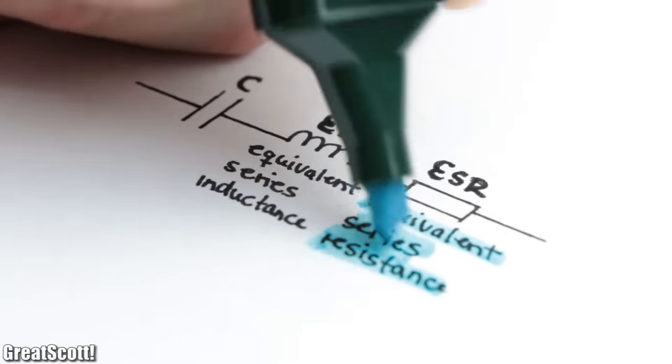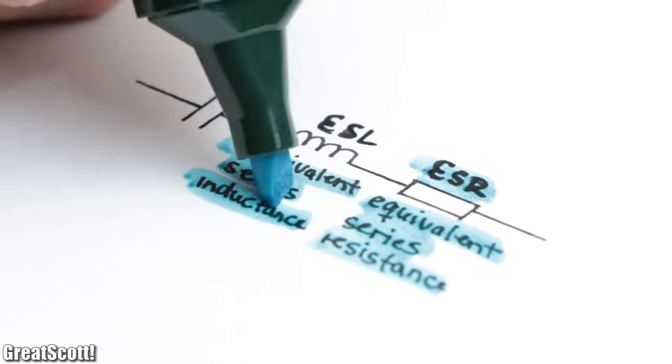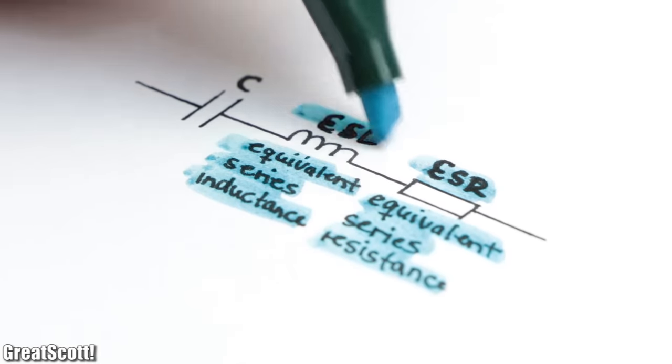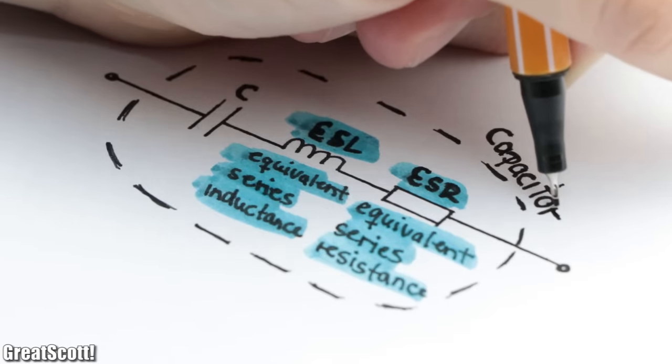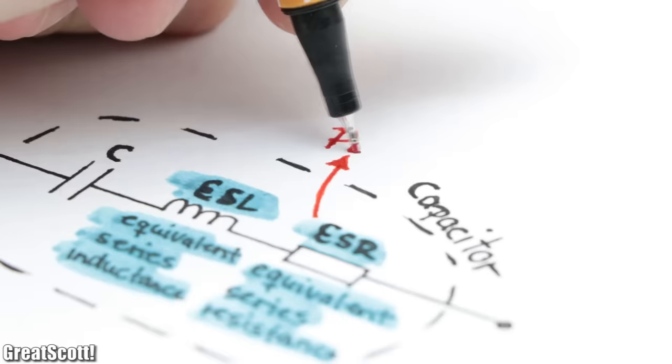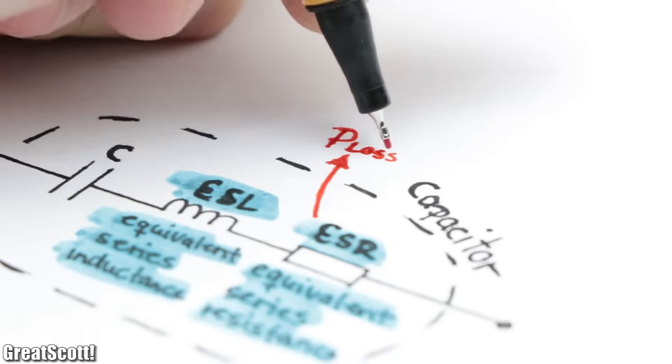Those are called equivalent series resistance or ESR and equivalent series inductance or ESL. And they do exist in a practical capacitor due to its internal structure. The big problem with that though, is that the parasitic resistance creates a power loss.